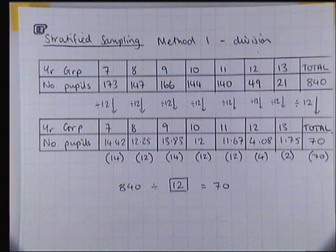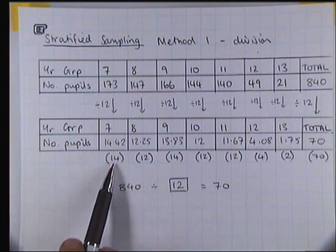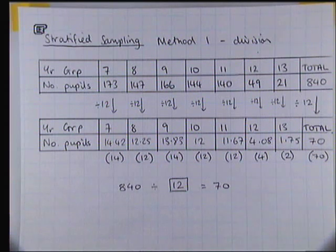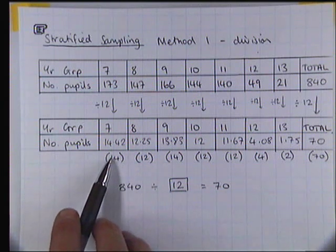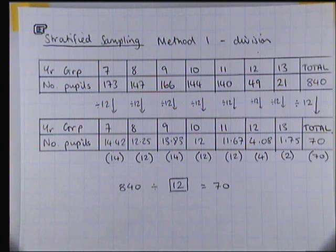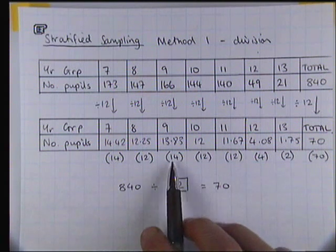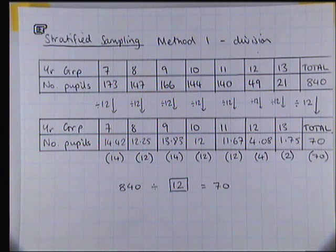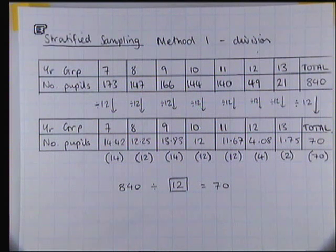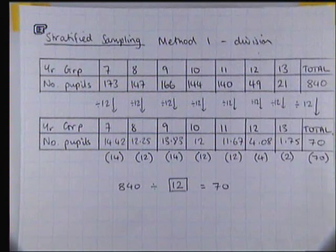All she has to do is find 14 year sevens and give them a questionnaire, probably randomly selecting those 14 students to ensure that it's fair. Then randomly select 12 year eight students and give them a questionnaire, and randomly select 14 year nine students and give them a questionnaire, etc., until she's given out all 70 of her questionnaires in the correct proportions.